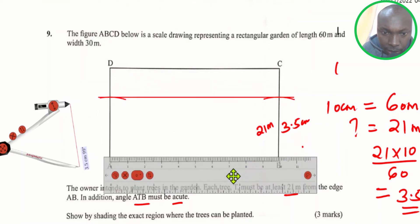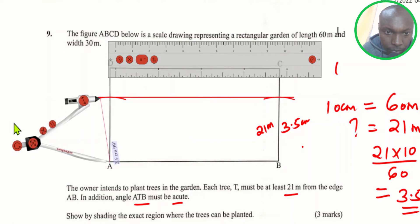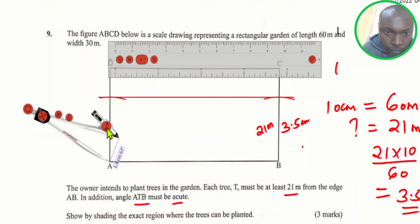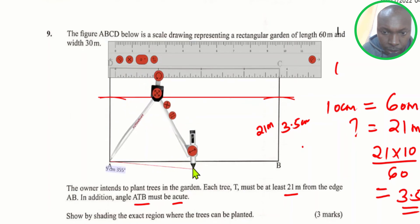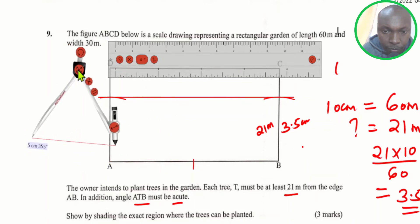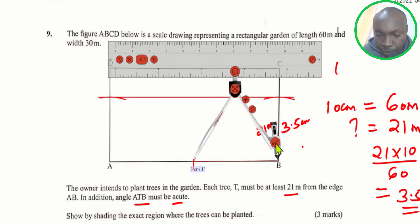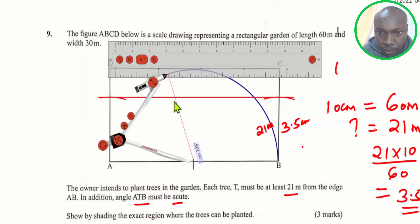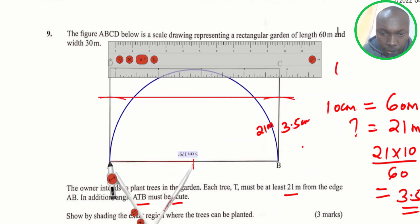Since we know AB is 10 centimeters, the midpoint will therefore be 5 centimeters. So the midpoint will be at 5. Having that point as the midpoint, you position a pair of compasses at B and simply draw an arc from B to A. That is the arc — it should not go to the other side.